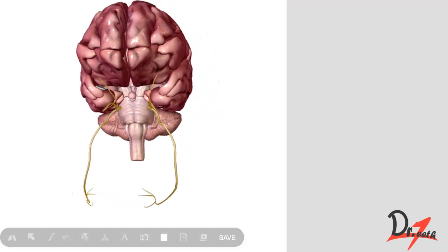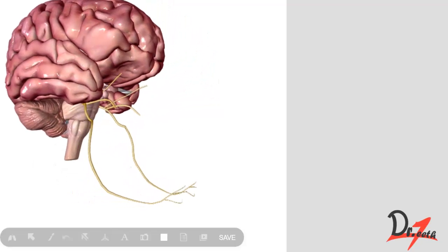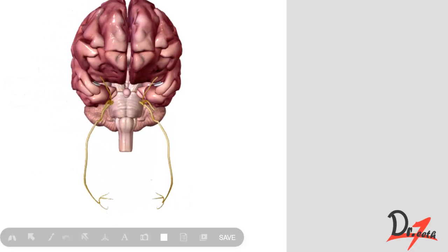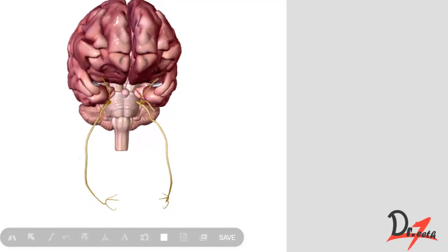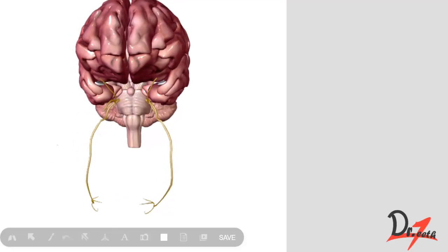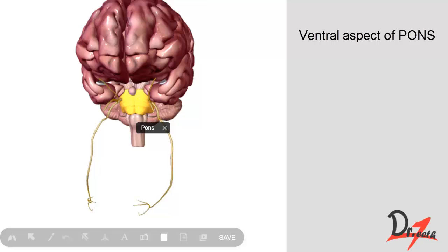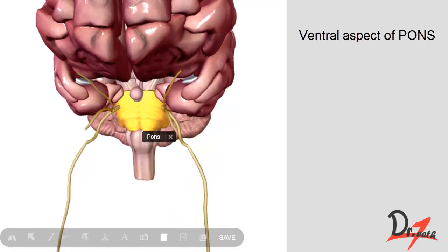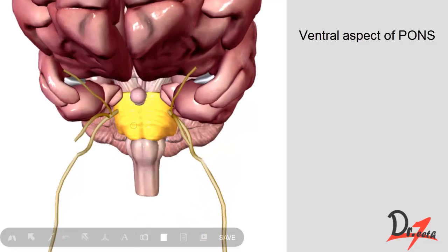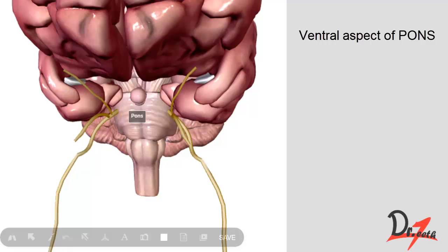Here is a model of the brain showing the trigeminal nerve. We have the left and right trigeminal nerves, each attached to the ventral aspect of the pons. If we zoom in, you can see it is attached to the ventral aspect of the pons — this is the sensory root. There is also a small motor root.